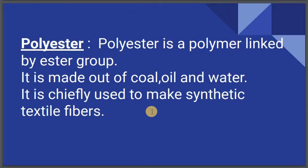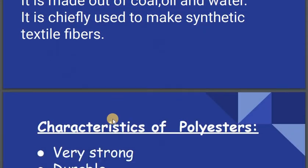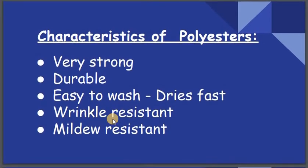The next synthetic fiber is polyester. It is made from ester group monomers and is produced from coal, oil, and water. It is chiefly used to make synthetic textile fibers. The characteristics of polyester are: it is very strong and durable, lasts longer, is easy to wash, dries faster, does not wrinkle, and is mold resistant — meaning molds and fungus will not form on this type of fabric.